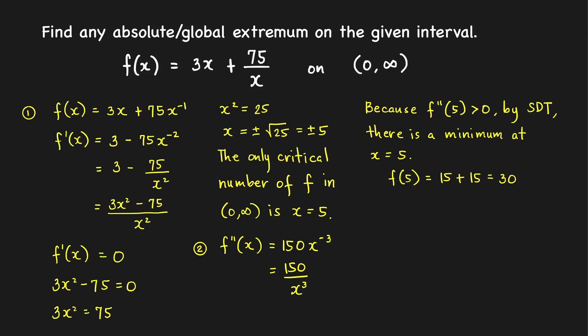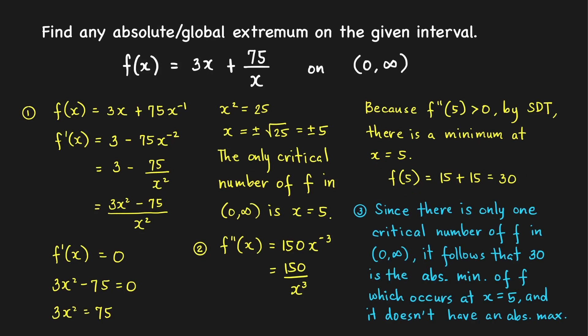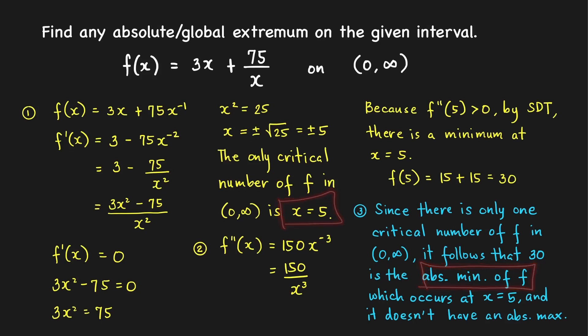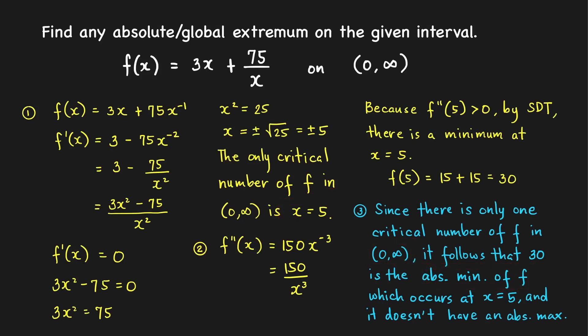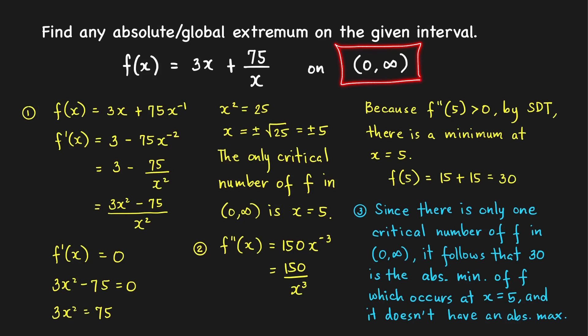We conclude that this minimum is an absolute minimum of f, because x = 5 is the only critical number of the function in the interval (0, ∞). The absolute minimum of f is 30, occurring at x = 5. Since the given interval is open, the function f does not have an absolute maximum.